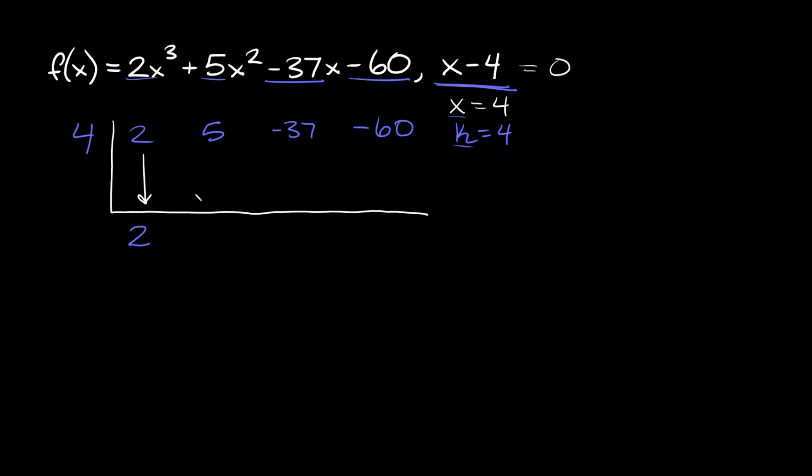And to find the next number, you just multiply your coefficient times your k value. So that's going to be equal to 8. Now the numbers that we're going to list down here, we always add to the numbers up here. So just add straight down. So 5 + 8 = 13.